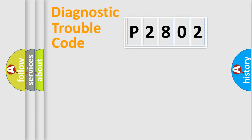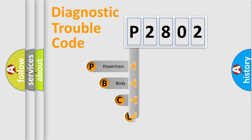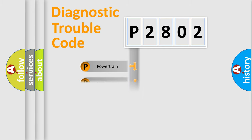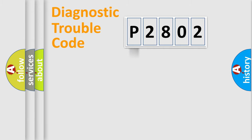First, let's look at the history of diagnostic fault code composition according to the OBD2 protocol, which is unified for all automakers since 2000. We divide the electric system of the automobile into four basic units: powertrain, body, chassis, and network.